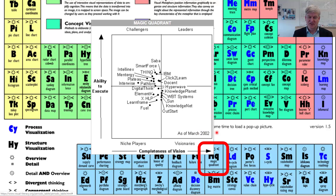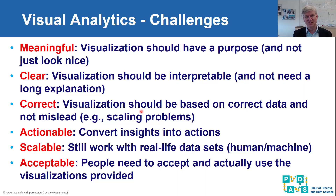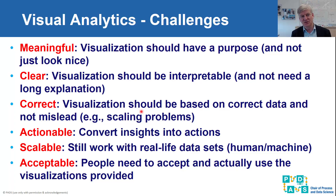For example, Gartner's reports use so-called magic quadrants, where different players are plotted using two dimensions. These things are used so often that they get meaning by themselves. These are different visualization types, and we will now talk more about what the challenges are, and towards the end, what visualizations are not smart to use in certain circumstances.